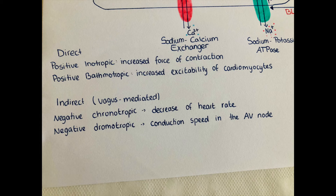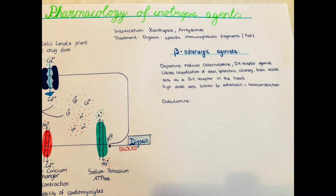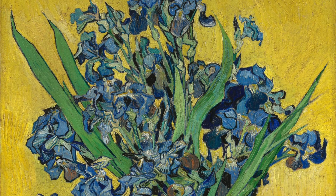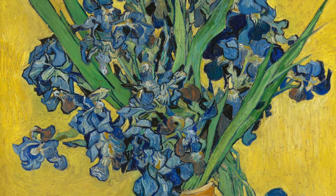Digoxin in excess doses can lead to digoxin intoxication. Especially in patients with underlying hypokalemia — low potassium levels — this can predispose them to toxicity, because digoxin normally competes with potassium for the same binding site on the sodium-potassium ATPase pump. A common symptom of intoxication is xanthopsia, where the patient sees everything with a yellow filter. Interestingly, the painter Vincent van Gogh is believed to have been affected by this condition due to taking too much digitalis, which is thought to have influenced his paintings.